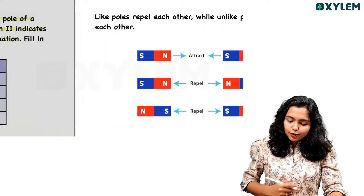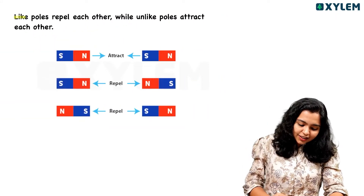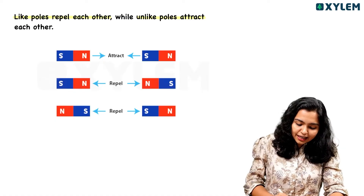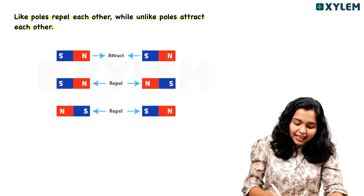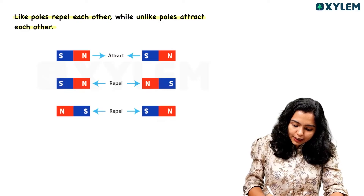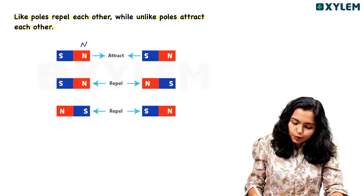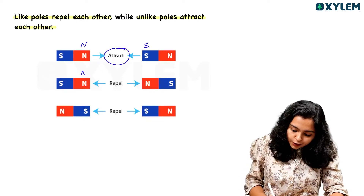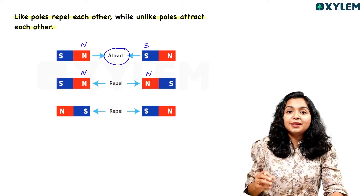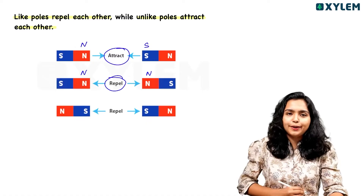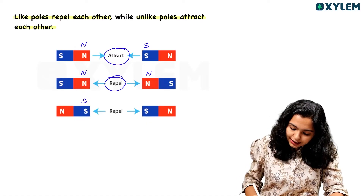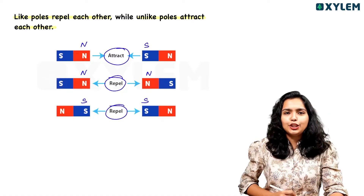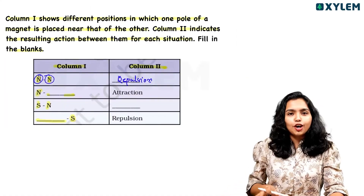You can see the general points: like poles repel each other and unlike poles attract each other. For example, if you have South-South that is a like arrangement and they repel. If you have North-South that is unlike and they attract. This is easy to fill in these columns.